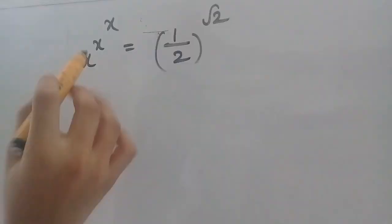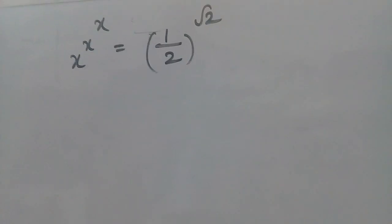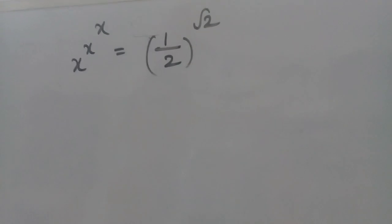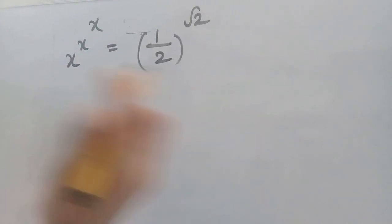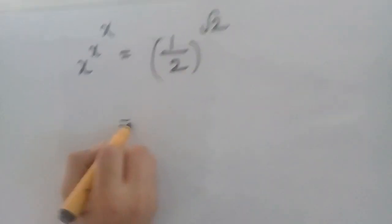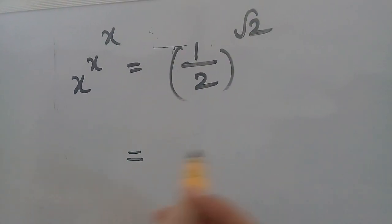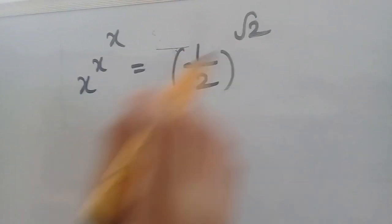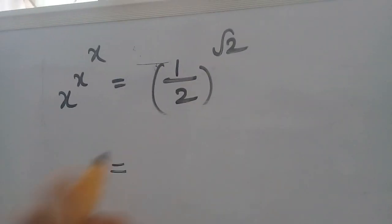x power x power x is equals to 1 by 2 whole power root 2. Let us go to the solution — how to solve it. We have to do some changes to get all three terms equal.